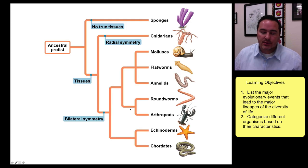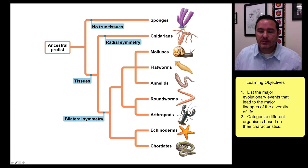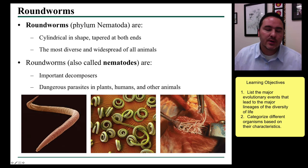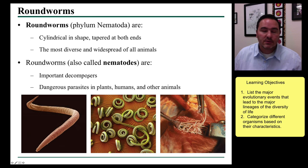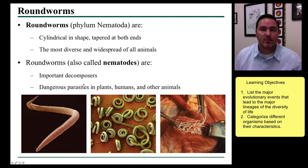Then we come to the group containing roundworms and arthropods. Roundworms belong to the phylum Nematoda. They're very simple organisms — cylindrical in shape, tapered at both ends — and they have a mouth and an anus. They are important decomposers found plentifully in the ground, but they're also dangerous parasites for plants, humans, and many other animals. Here's an intestine that's full of roundworms.